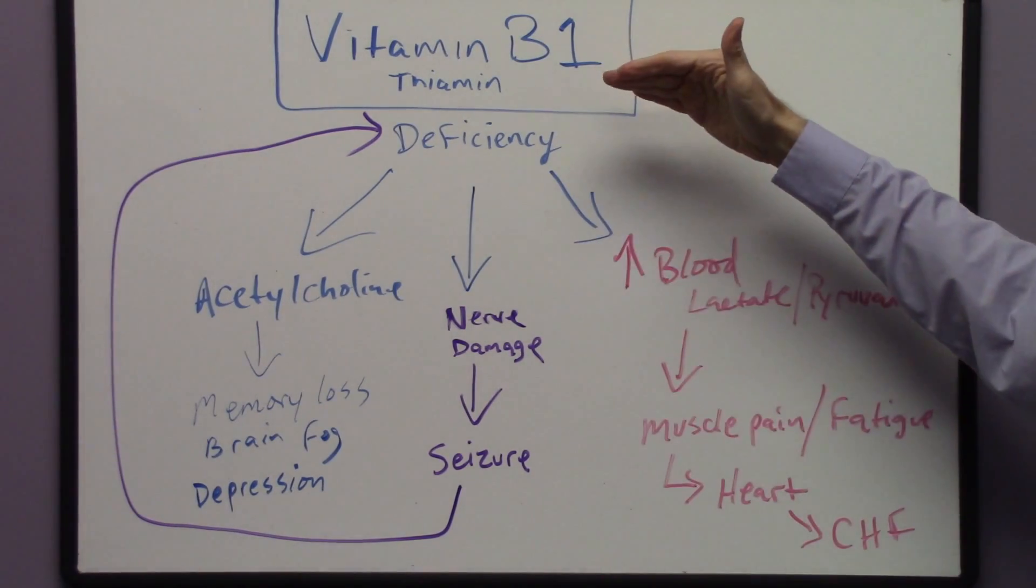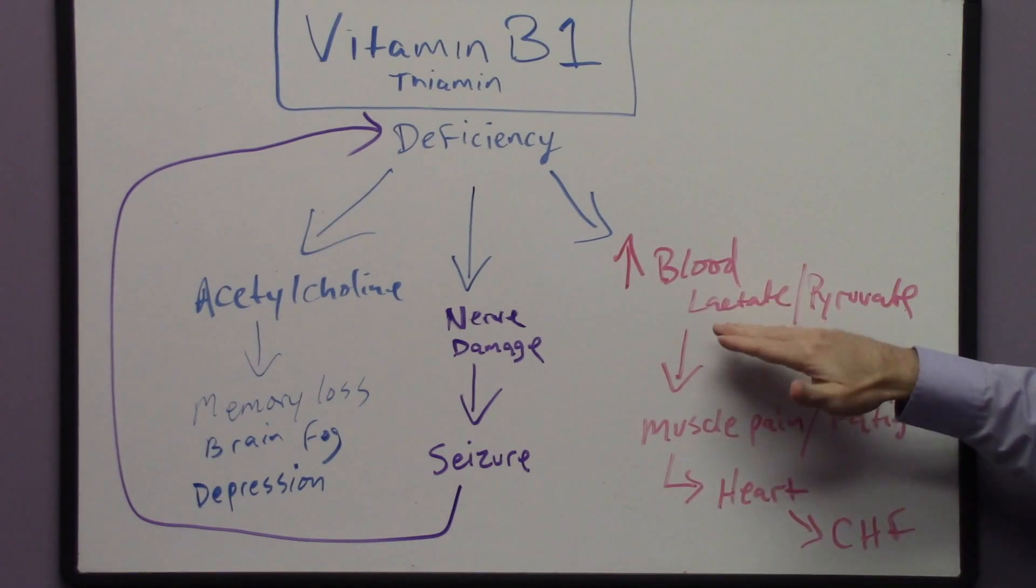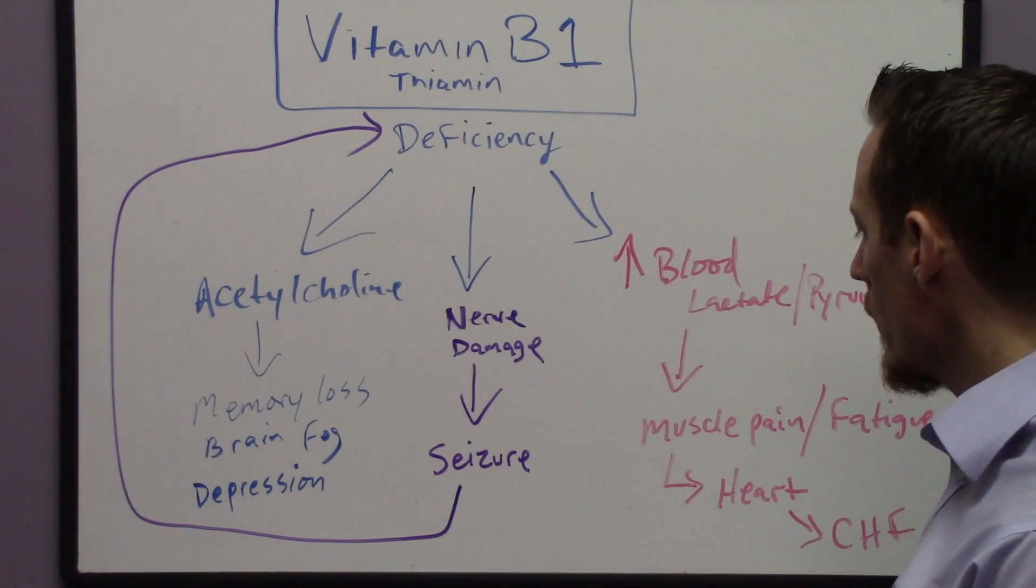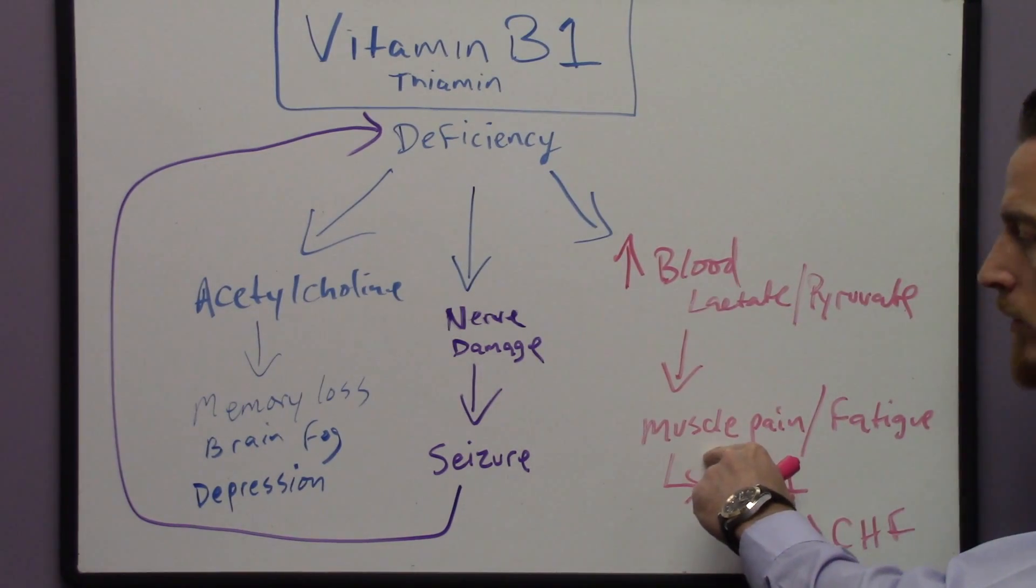We take a person who is vitamin B1 deficient. They develop this abnormal chemical parameter in the blood, which leads to increased acidic buildup and lack of the ability to produce energy. That leads to muscle fatigue...